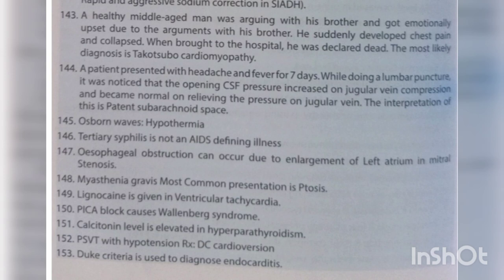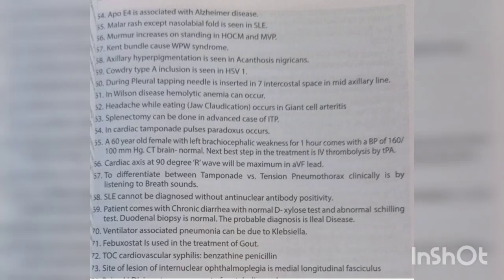Duke's criteria is used to diagnose endocarditis. ApoE4 is associated with Alzheimer's disease. Malar rash sparing the nasolabial fold is seen in SLE. Murmur increases on standing in HOCM and MVP. Kent bundle causes WPW syndrome. Axillary hyperpigmentation is seen in acanthosis nigricans. Cowdry type A inclusions are seen in HSV-1.